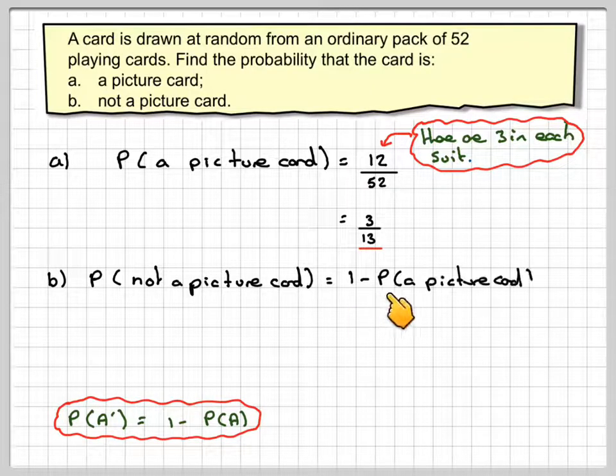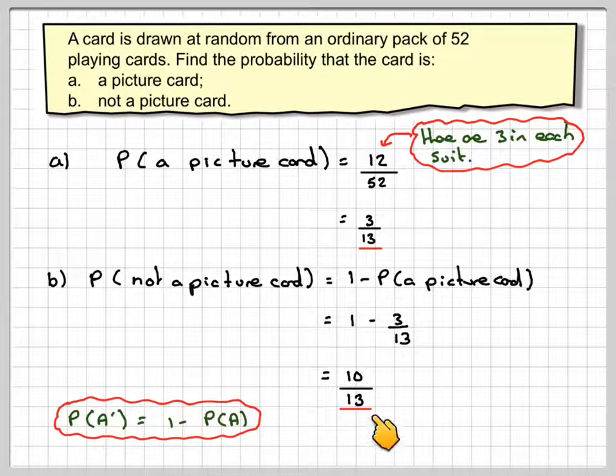So it's going to be 1 minus the probability of a picture card, which is 1 minus 3 thirteenths, which we just calculated here, which gives me 10 thirteenths as the final answer.